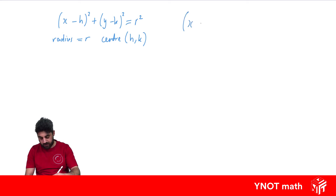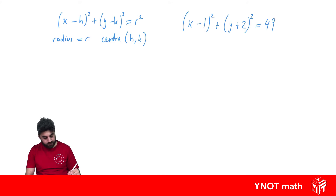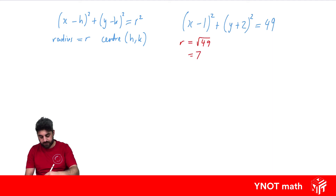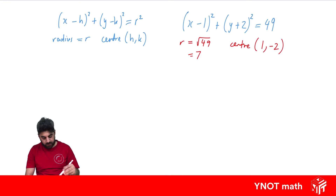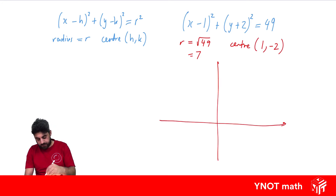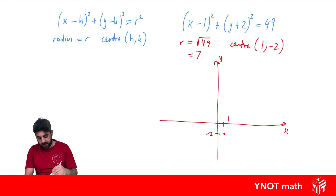For example, x minus 1 squared plus y plus 2 squared equals 49. The radius is the square root of 49, which is 7. The center is at (1, minus 2) — taking the opposite sign of each value in the brackets. We can now sketch this: the center at (1, minus 2) and a radius of 7, drawing the circle accordingly.